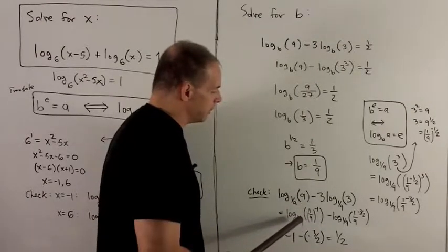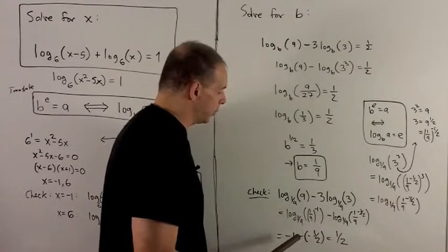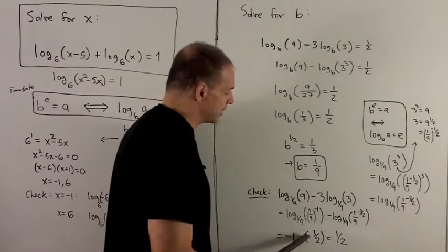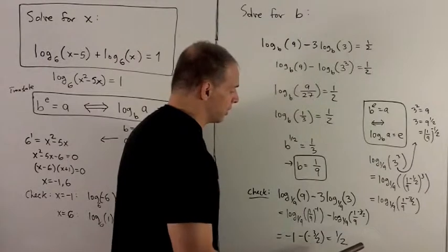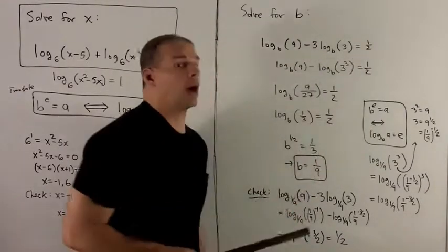So this equation here is going to collapse down to minus 1, minus minus 3/2. That's going to give me 1/2, and you notice that's what we were expecting to come out, a 1/2.